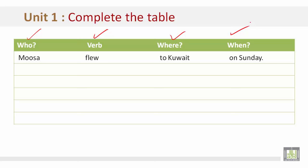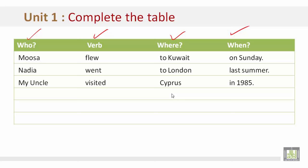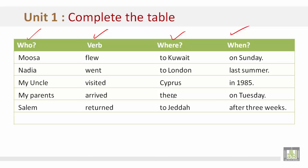Let's look at example B: Nadia went to London last summer. Let's look at example C: My uncle visited Cyprus in 1985. Let's look at example D: My parents arrived there on Tuesday. Let's look at example E: Salem returned to Jeddah after three weeks. Let's look at example F: I drove to the coast last year.